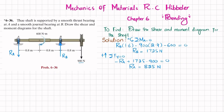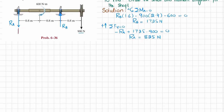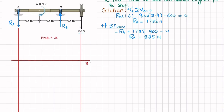Now that we have R_A and R_B, we'll move toward drawing the shear force and bending moment diagrams. I will draw the shear force diagram. This is the length x in meters. The shear force unit will be in Newton. Let one division equal 300 due to limitation of space. So we have 300, 600, 900, and then minus 300, minus 600, and so on.